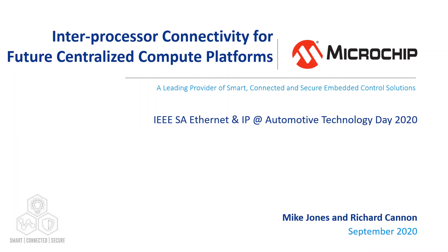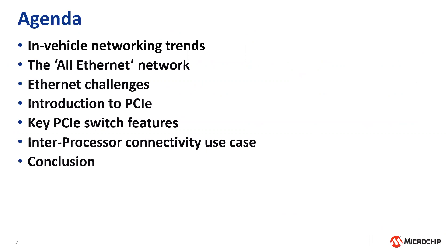Thank you and welcome. Today myself and Richard are going to present to you the topic of inter-processor connectivity for future centralized compute platforms. Firstly the agenda: I'll kick off with some highlights on in-vehicle networking trends, then talk about the concepts of an all-Ethernet in-vehicle network and investigate some of the challenges for Ethernet in this. At that point I'll hand over to Richard to give an introduction on PCIe, talk about some of the key features, and then conclude with a use case of the inter-processor connectivity.